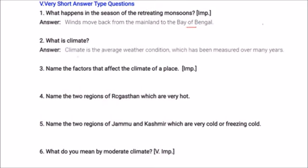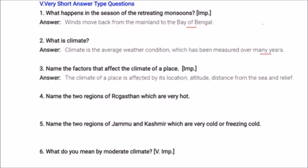What is climate? Climate is the average weather condition which has been measured over many years. The climate of a place is affected by the location, the altitude (that is the height), the distance from the sea, and the relief (that is the slope).